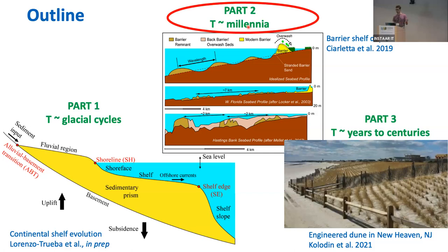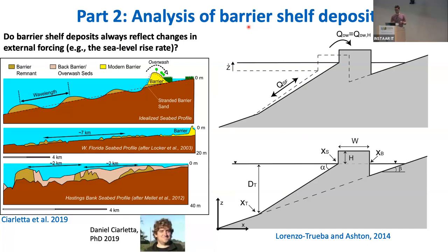Part two: barrier evolution and barrier shelf deposits. Barrier shelf deposits are often associated with sudden changes in external forcing, like a pulse in the rate of sea level rise. Dan did a lot of literature review, looking at barrier shelf deposits in different continental shelves. He found that there is actually a characteristic distance between these barrier shelf deposits — in the English Channel it's on the order of two kilometers, in Florida it's on the order of seven kilometers. This suggests that something else may be going on, apart from pulses in the rate of sea level rise.